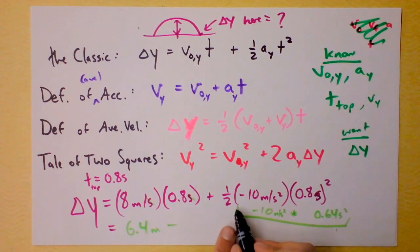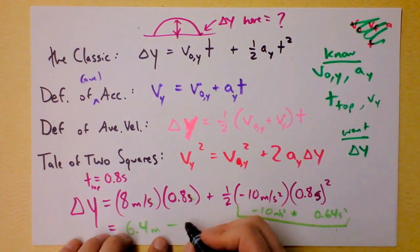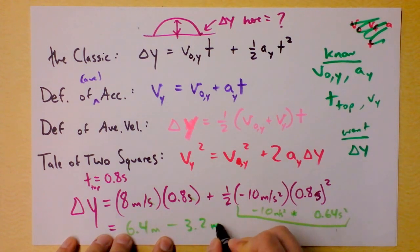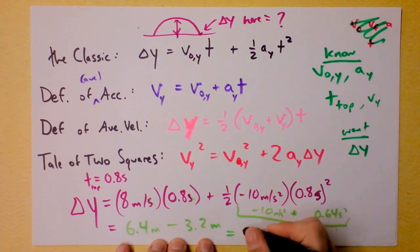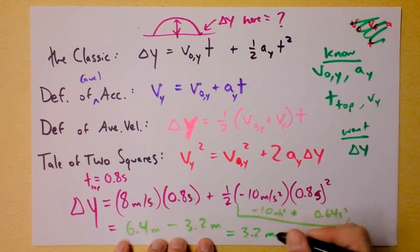The second squareds cancel out. And then I'm dividing it in half, so it's going to be minus 3.2 meters. This is a very interesting symmetry, but I find the answer to be 3.2 meters.